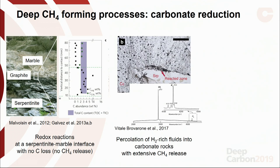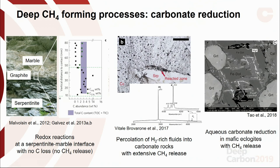Then, in our paper, the process is slightly different. This is percolation of hydrogen-rich fluids into carbonated ultramafic rocks and production of large amounts of methane — all these bubbles are methane-rich. And again, a very important example from China: this is reduction of carbonate in mafic eclogites. This is important because mafic eclogites are the key rock type of subduction zone metamorphism. Having methane produced in this rock is very important to change, at least in part, our understanding of the fluids being produced at depth.